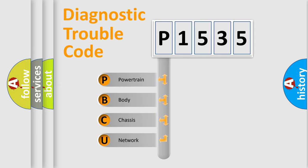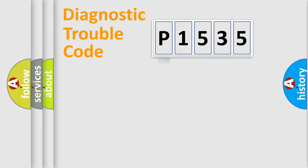We divide the electric system of the automobile into four basic units: Powertrain, Body, Chassis, and Network. This distribution is defined in the first character code.